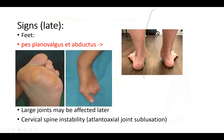Late signs on the feet: the patient will suffer from pes planovalgus and abductus. There is certainly a deformity here, and you have the too-many-toes sign from behind — you see all those toes which you shouldn't actually see from behind. There is also bursitis under the head of the metatarsals. Large joints might be affected later. You should also consider cervical spine instability. There is a ligament behind the dens axis that might rupture, leading to atlantoaxial joint subluxation. This needs to be considered before doing surgery on any patient who has rheumatoid arthritis.